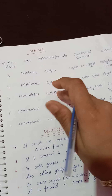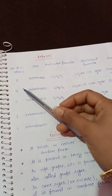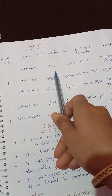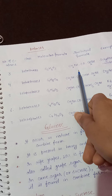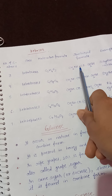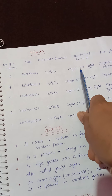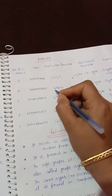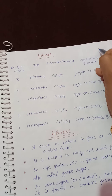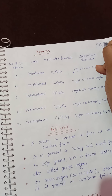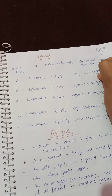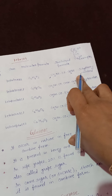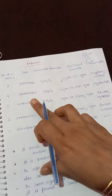For ketoses: 3 carbons = ketotriose (C₃H₆O₃), structural formula CH₂OH–CO–CH₂OH, example dihydroxyacetone; 4 carbons = ketotetrose (C₄H₈O₄), structural formula CH₂OH–CO–CHOH–CH₂OH, example erythrulose; 5 carbons = ketopentose (C₅H₁₀O₅), example ribulose and xylulose.